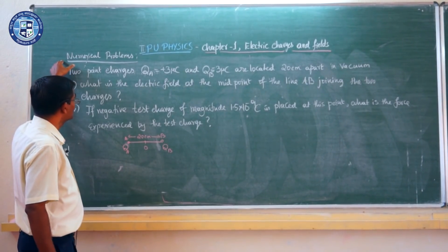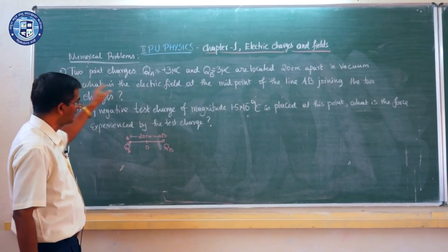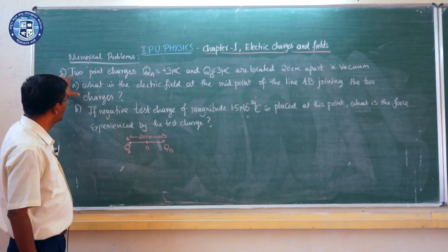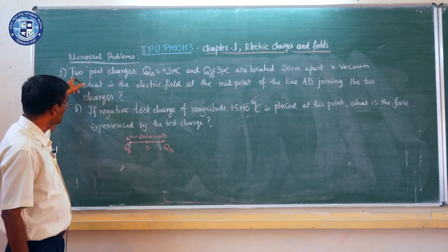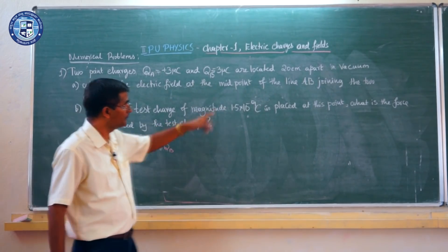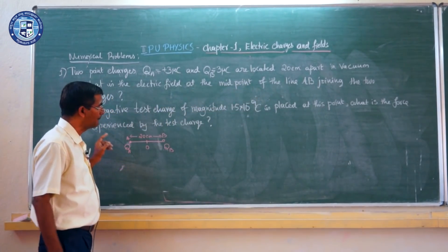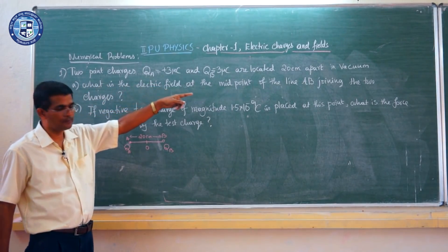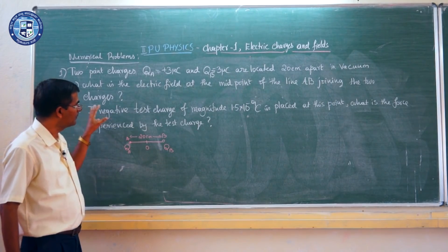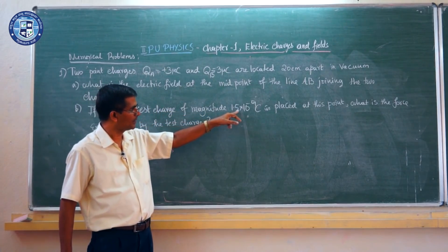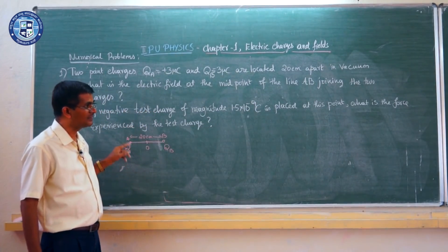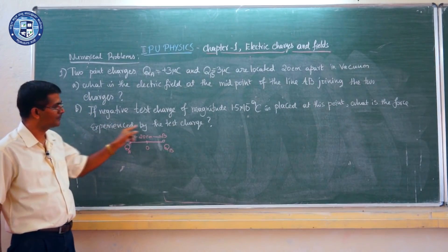Friends, I will discuss one of the numerical problems often asked in the electric field chapter. This is a previous year problem: consider two point charges QA = +3 microcoulombs and QB = -3 microcoulombs located 20 centimeters apart in vacuum. What is the electric field at the midpoint of the line joining AB? Also, if a negative test charge of magnitude 1.5 nanocoulombs is placed at this point, what is the force experienced by this test charge?